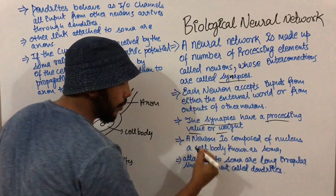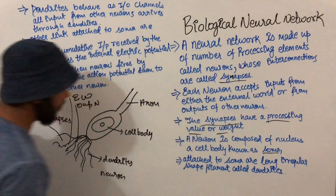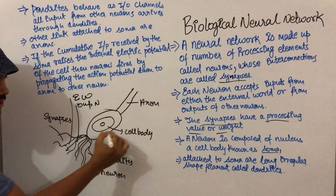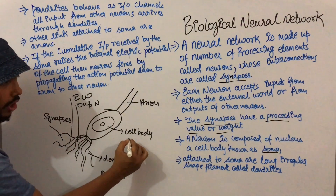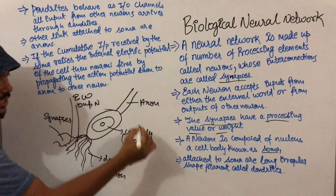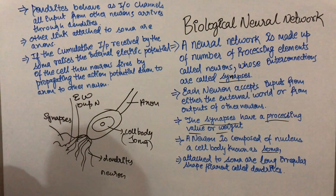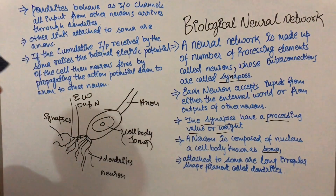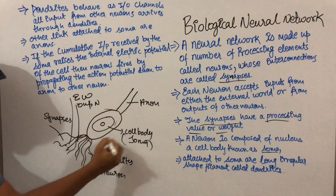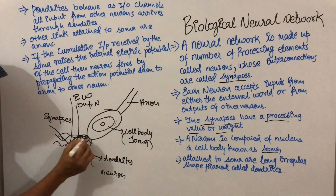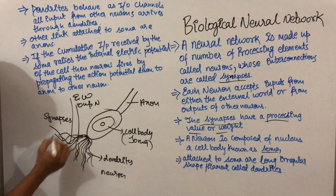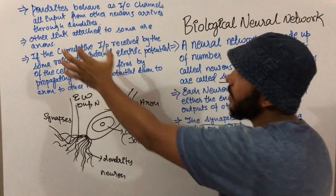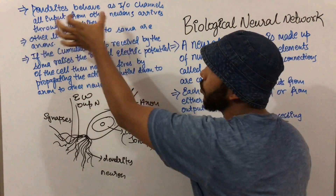Now coming to the structure of the neuron. A neuron is composed of a nucleus and a cell body known as the soma. Our neuron has a nucleus present in it, and this nucleus has a cell body which we call the soma. Attached to the soma are long, irregular-shaped filaments called dendrites. Dendrites behave as an I/O channel — all input from other neurons arrives through dendrites.